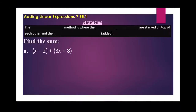Now in this part of the lesson, I'm going to discuss some of the strategies that you could use for adding linear expressions. The first method is called the vertical method, where you take the like terms and stack them one on top of the other, then simplify — which means we've added and broken it down to as few terms as possible.